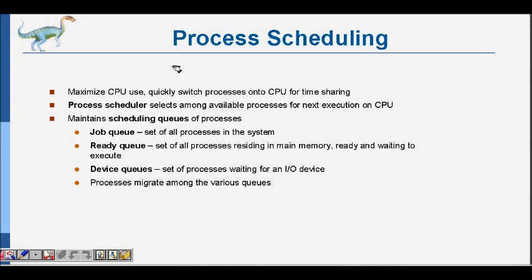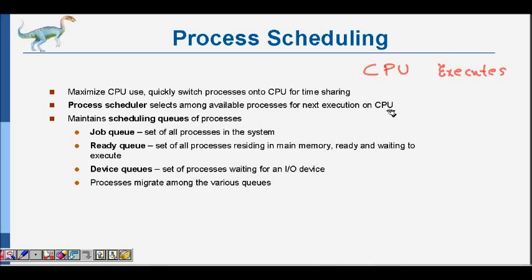In this lecture we are going to learn about process scheduling. In a computer there is one CPU — the central processing unit — which executes all the instructions. So the CPU is the workhorse that executes all your instructions. Even with one CPU, your computer can do multitasking and multiprogramming. Lot of applications can run in parallel: you can listen to music, work on your C++ code, and do web browsing all at the same time. This happens because many processes are running and sharing the CPU.